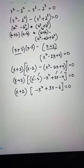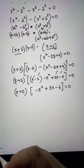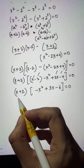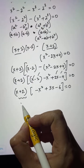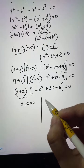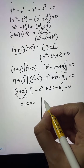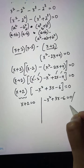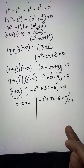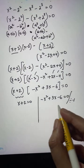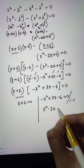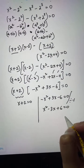Opening up the bracket inside, and simplifying, I get (x + 2)(negative x squared plus 3x minus 6) equals 0. Dividing the second factor by negative 1 gives (x + 2)(x squared minus 3x plus 6) equals 0. This gives us two equations to solve.